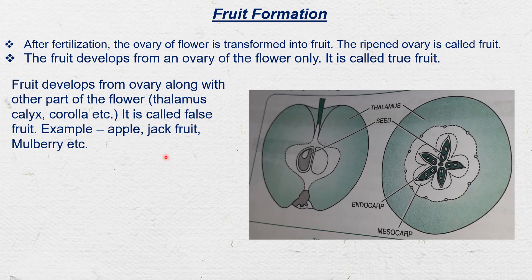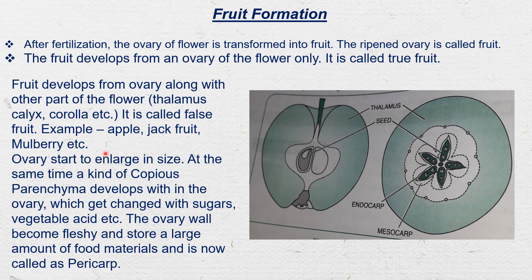Examples of false fruit include apple, jackfruit, and mulberry. If we look at apple formation from the ovary, the co-developed ovary may be involved in fruit formation. In this process, the ovary starts to enlarge in size; a copious parenchyma develops within the ovary which gets charged with sugars, vegetable acids, etc. The ovary wall becomes fleshy and stores a large amount of food material — it is now called the pericarp.